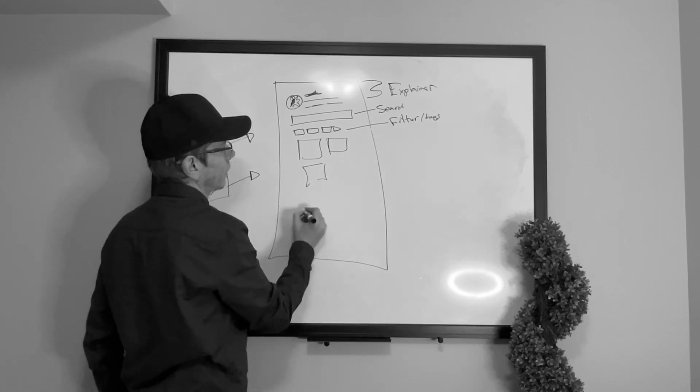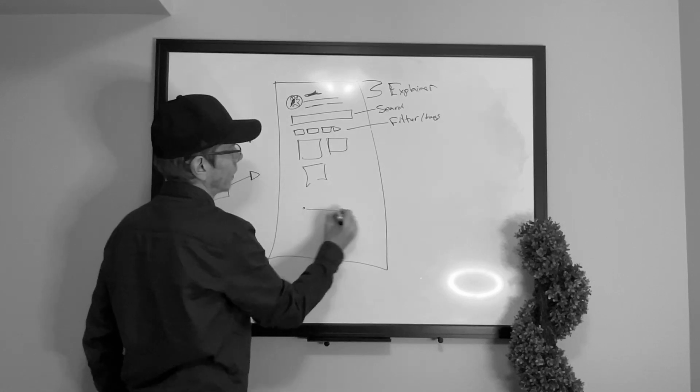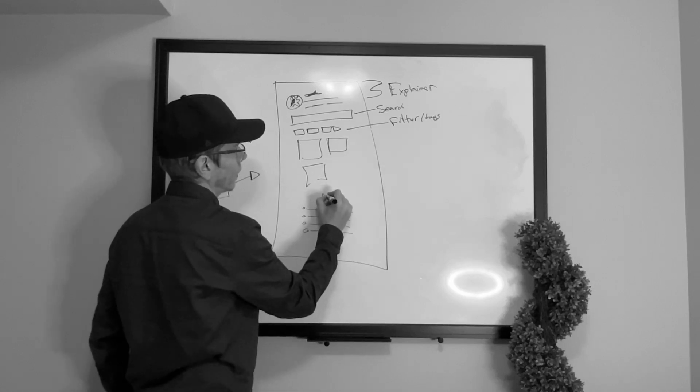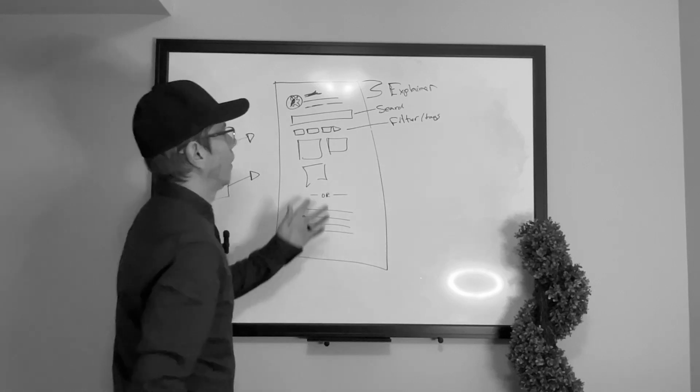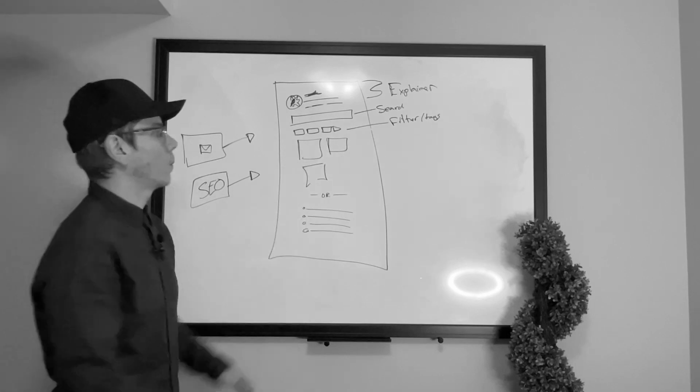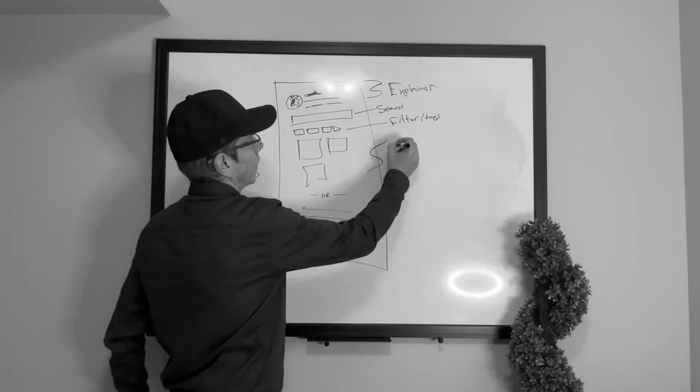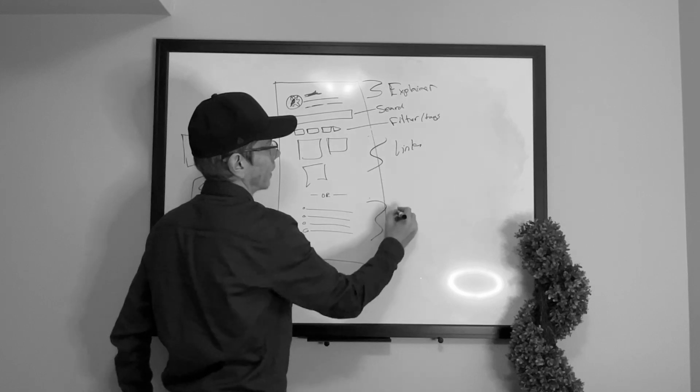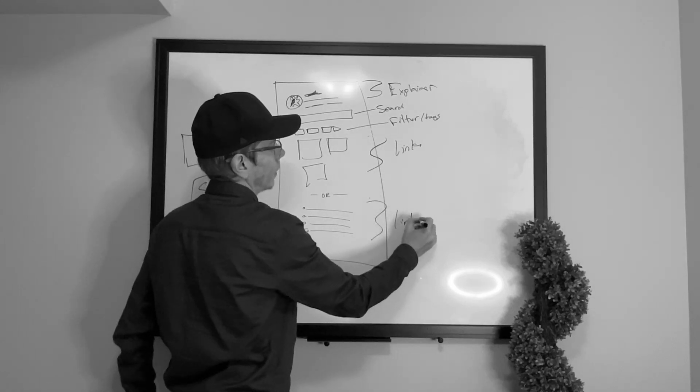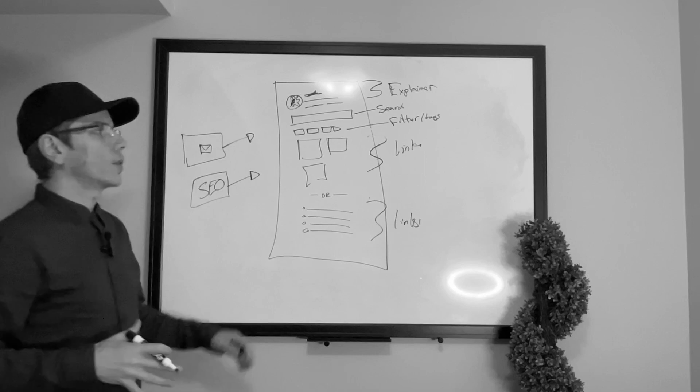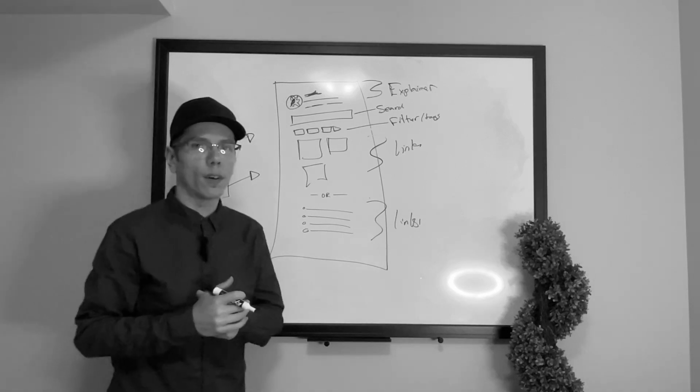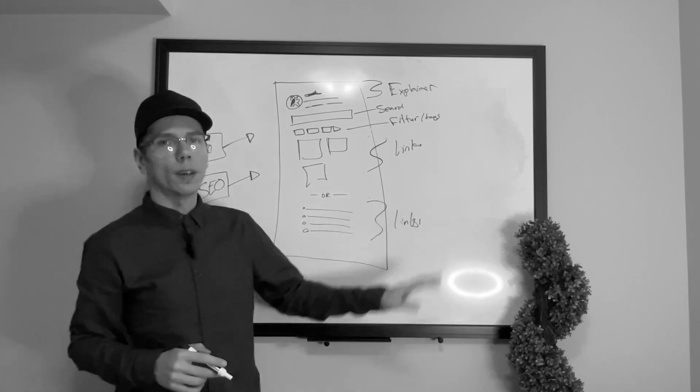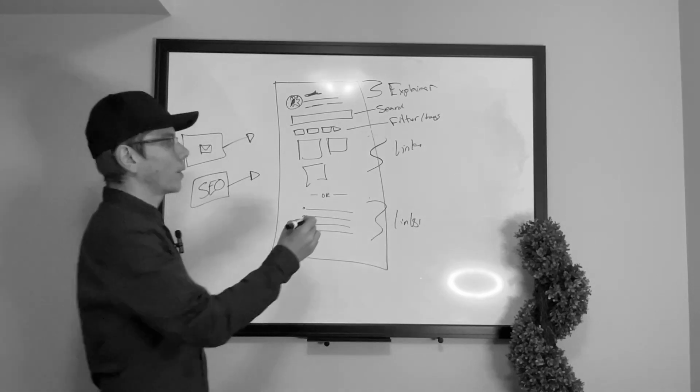Then there's multiple ways we can do this. We can also just do it in list form. This is now our links. And the same thing here, so we can have these links or whatever resources they are go straight to, like say this is a link directory right, this can go straight to the other websites or it can go to an intermediary page.